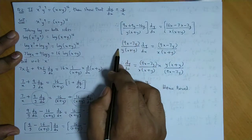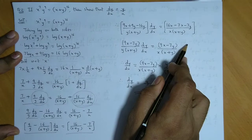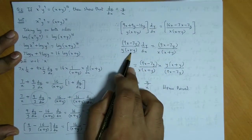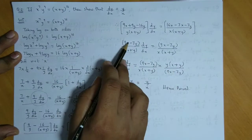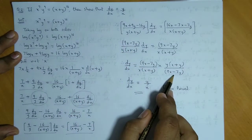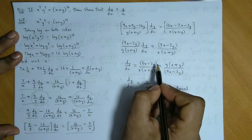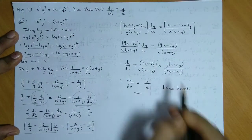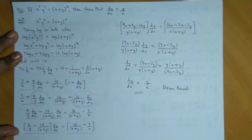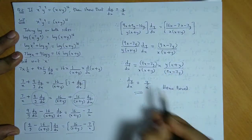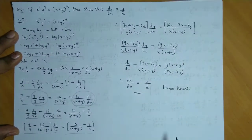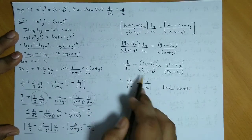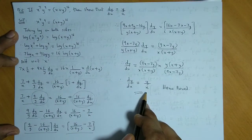अब यह सारे factors हम right hand side पे ले जाते हैं — यह जो denominator है यह numerator में और numerator denominator में आजाएगा. Now we can cancel out (9x minus 7y) with (9x minus 7y), और यह (x plus y) cancel हो जाएगा (x plus y) के साथ. So finally dy/dx की जो value रहती है वो है y upon x — and that is the required proof.